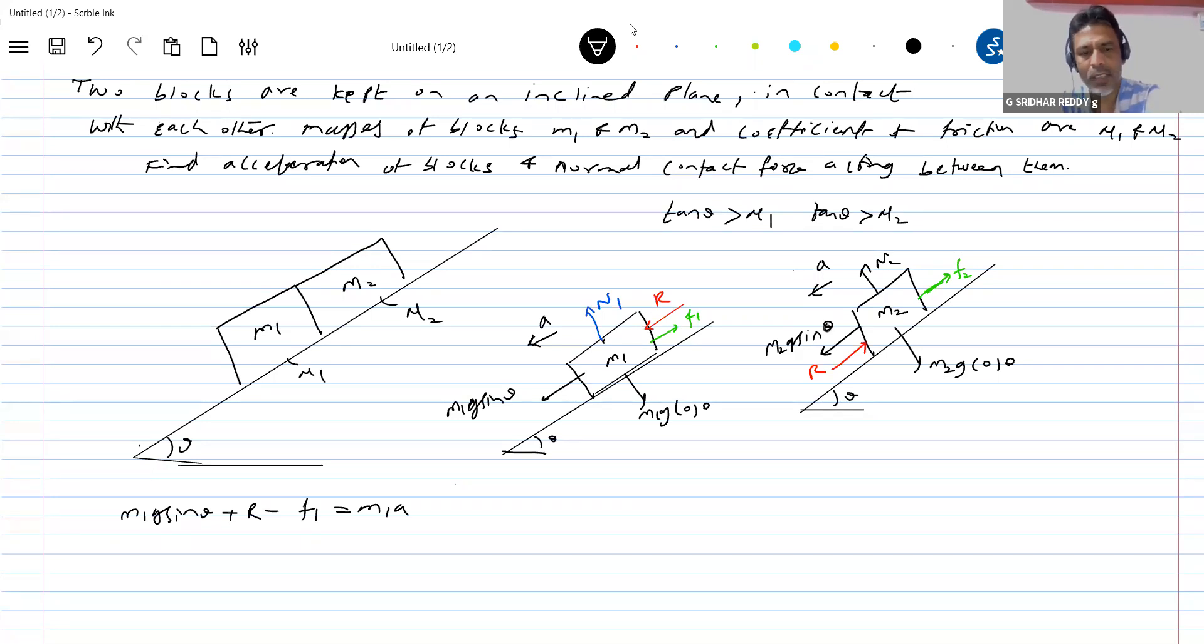Further what is F1? Mu N1. F1 is how much? Mu N1. And this is equal to M1g cos theta. Substituting this, M1g sin theta plus R minus mu1 M1g cos theta equal to M1a. Keep this equation 1.